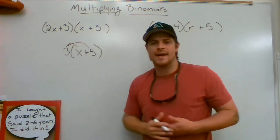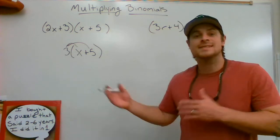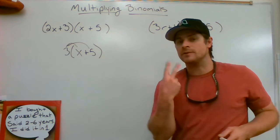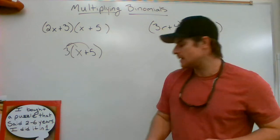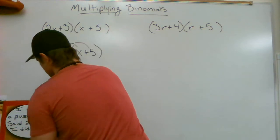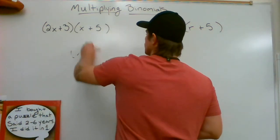So 3 needs to be multiplied by x and by 5. That's exactly what we're going to be doing—using the distributive property, but now we have to do it twice, not just one time. Let's take a look at how we do this and get started.